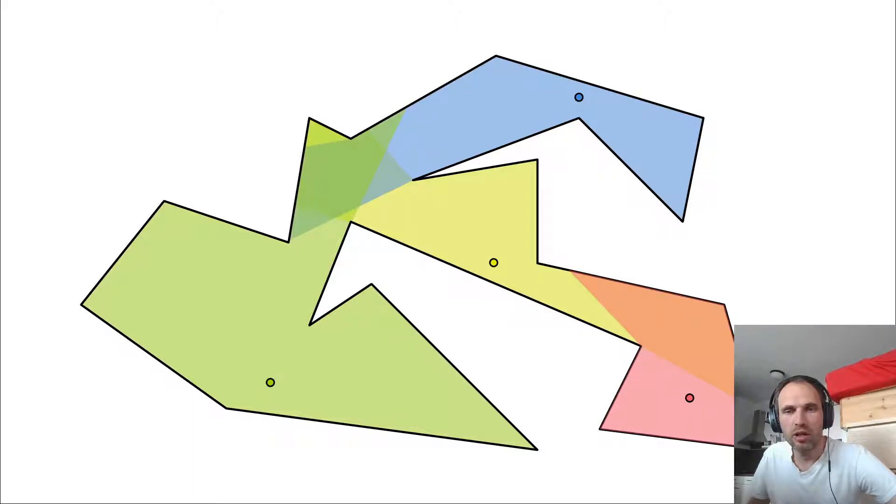So and then this guard sees this entire region and these four guards see together the entire gallery. And if you have a look a little bit at it, then you can see that you also need at least four guards because these crosses here cannot be guarded simultaneously. So it's impossible to guard two crosses at the same time. And that implies that you need at least four guards.